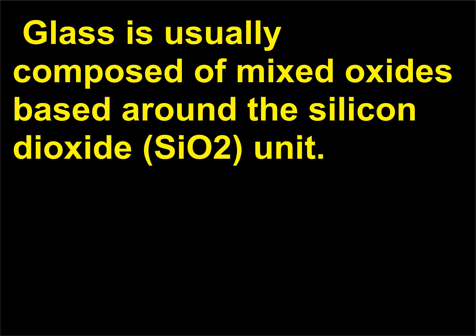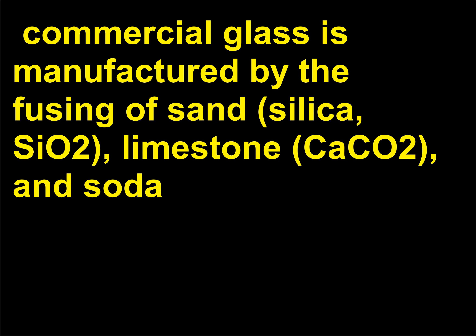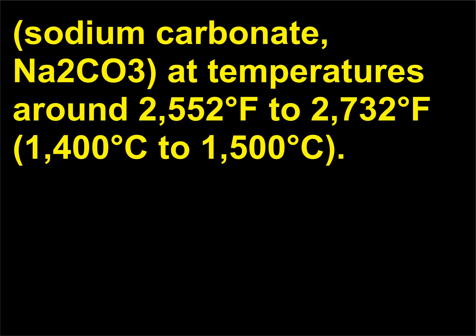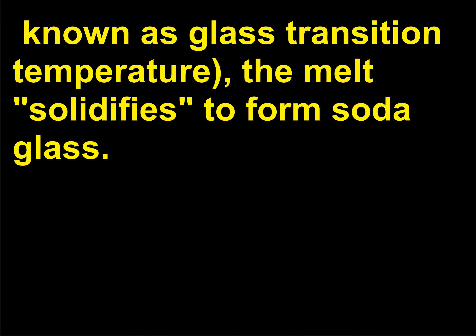Glass is usually composed of mixed oxides based around the silicon dioxide, SiO2, unit — a very good electrical insulator and generally inert to chemicals. Commercial glass is manufactured by the fusing of sand, silica SiO2, limestone CaCO3, and soda, sodium carbonate Na2CO3, at temperatures around 2,552 to 2,732 degrees Fahrenheit, 1,400 to 1,500 degrees Celsius. On cooling, the melt becomes very viscous, and at about 932 degrees Fahrenheit, 500 degrees Celsius, known as glass transition temperature, the melt solidifies to form soda glass.